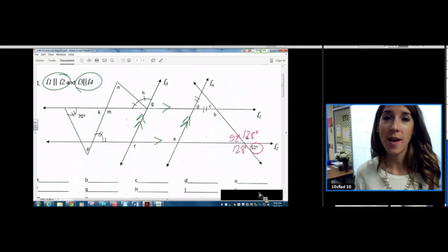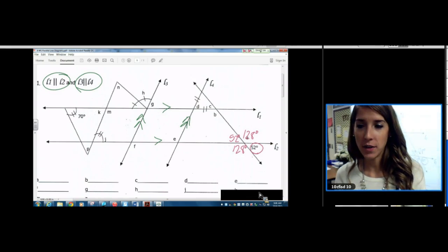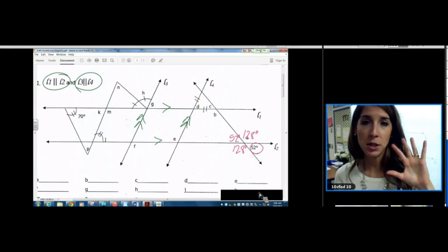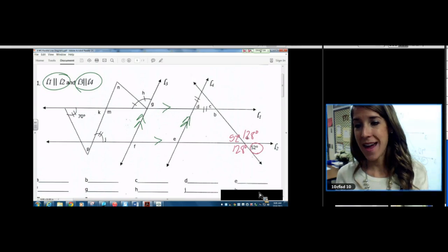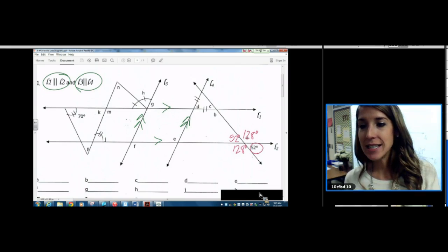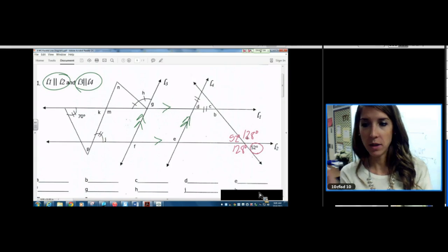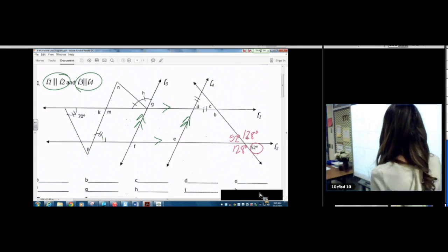And really, the more numbers, the more angles you find, the better off you're going to be. And it does help to write it on the picture, not just in the blanks below. So we have A so far. We have A as 128. Now I see some alternate interior angles. So I'm going to start to use that. 128. Go to the alternate side here. 128.